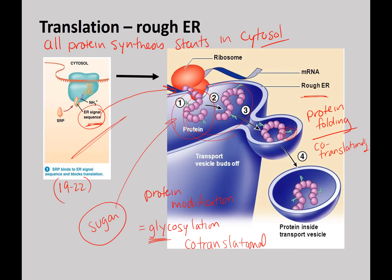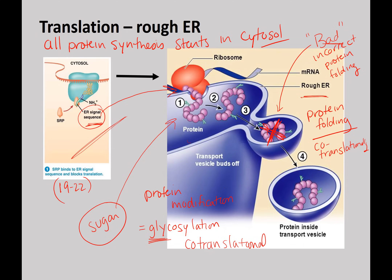Glycosylation is happening co-translationally, so as the protein is being folded and translated you start getting these glycosylations added. If the protein does not fold correctly, it will be sent to the cytoplasm where a proteasome chops it back to its amino acids so we can recycle the components. Two of the most common types of protein modifications that start in the ER are O-linked and N-linked glycosylation.